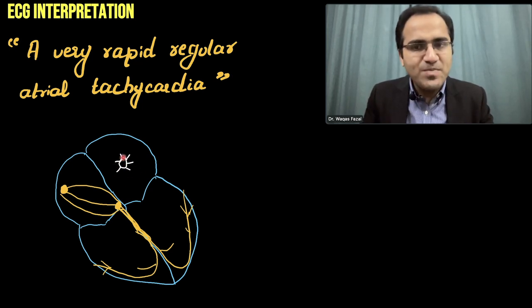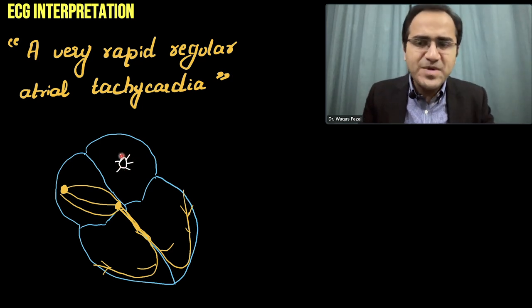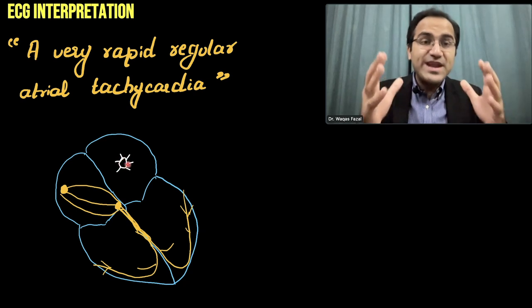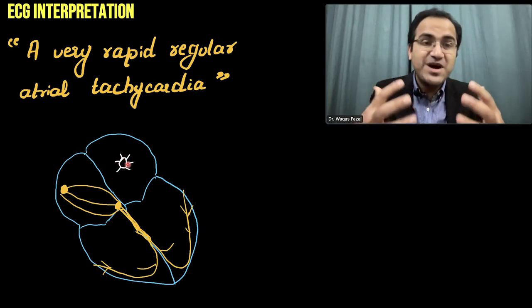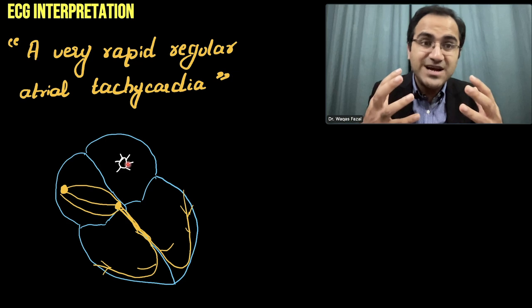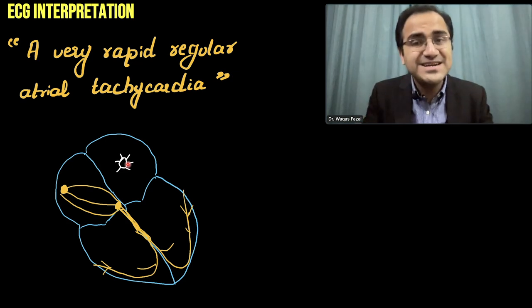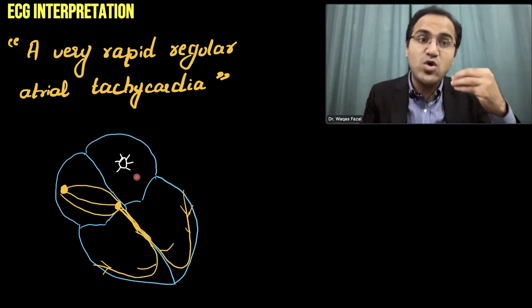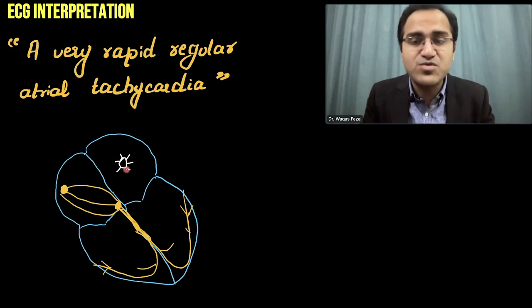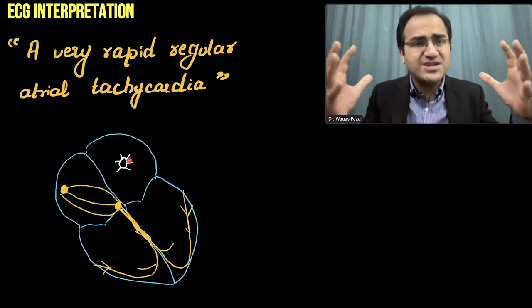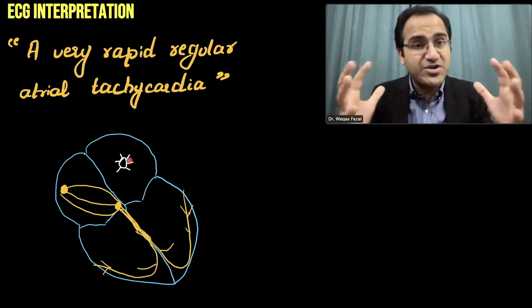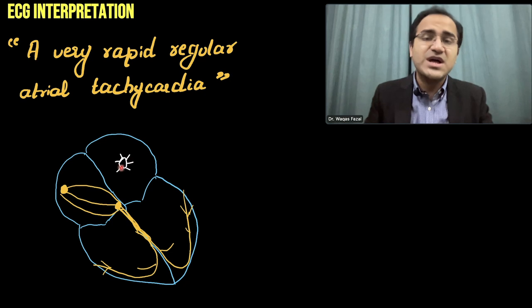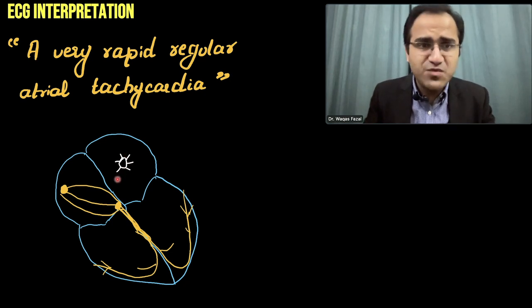How do these ectopic foci, or ectopic pacemakers, appear within the atria? These ectopic foci appear whenever there is myocardial injury, myocardial ischemia, hypoxia, or myocardial infarction. Anything that changes the structure of the atria can produce ectopic foci. Those ectopic foci produce electrical currents and those electrical currents result in rapid contraction of atria at such a fast pace that it results in atrial tachycardia.